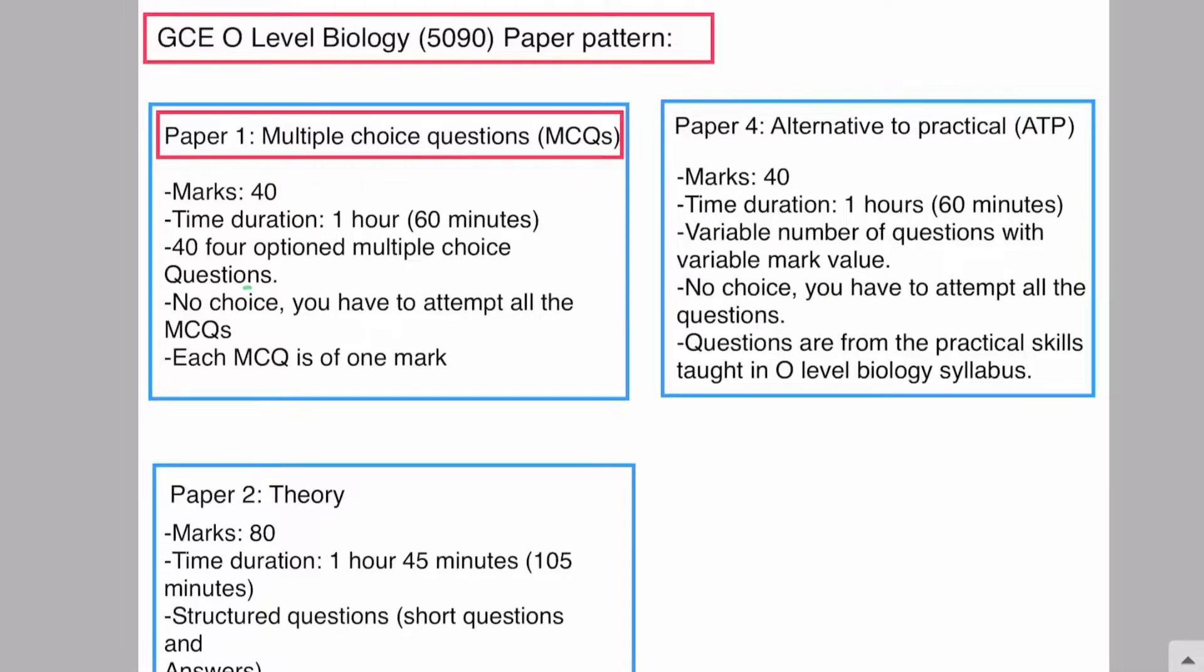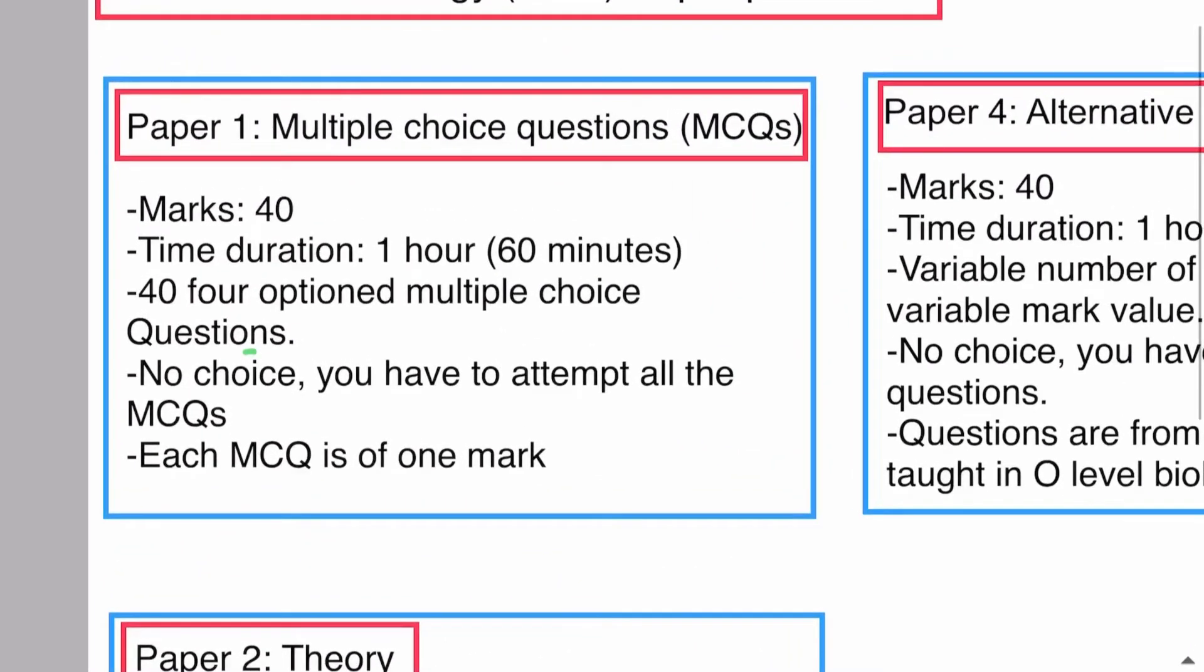These are Paper 1, Paper 2, and Paper 4. Let's discuss each paper one by one. Paper 1 is simply a multiple choice question paper or MCQ paper.